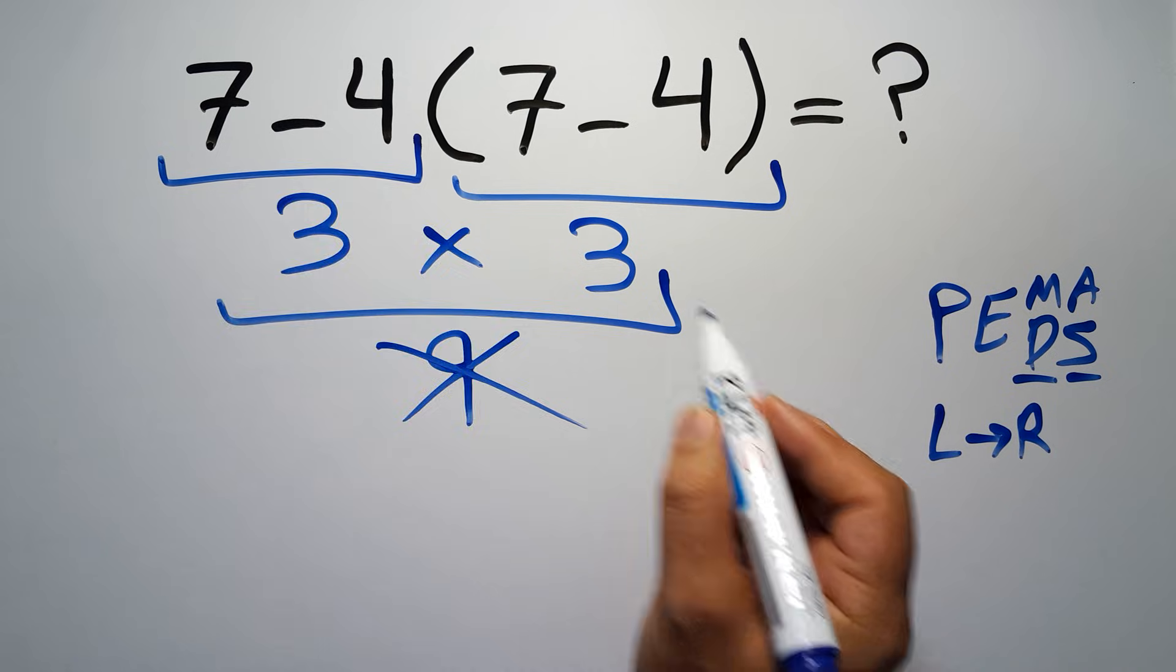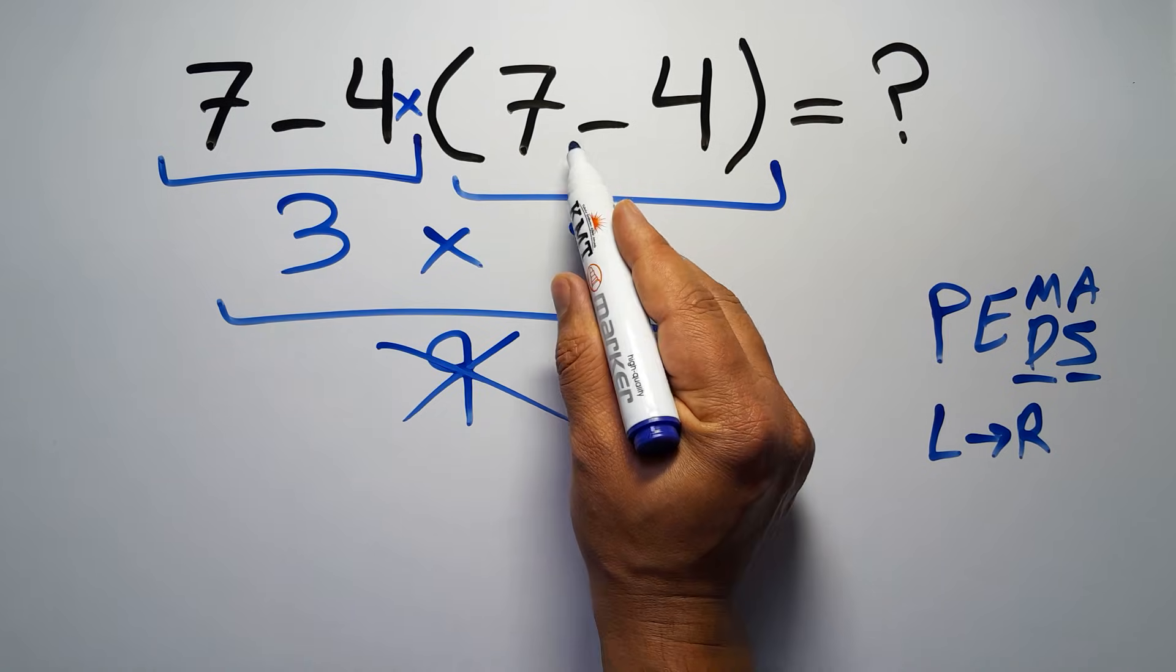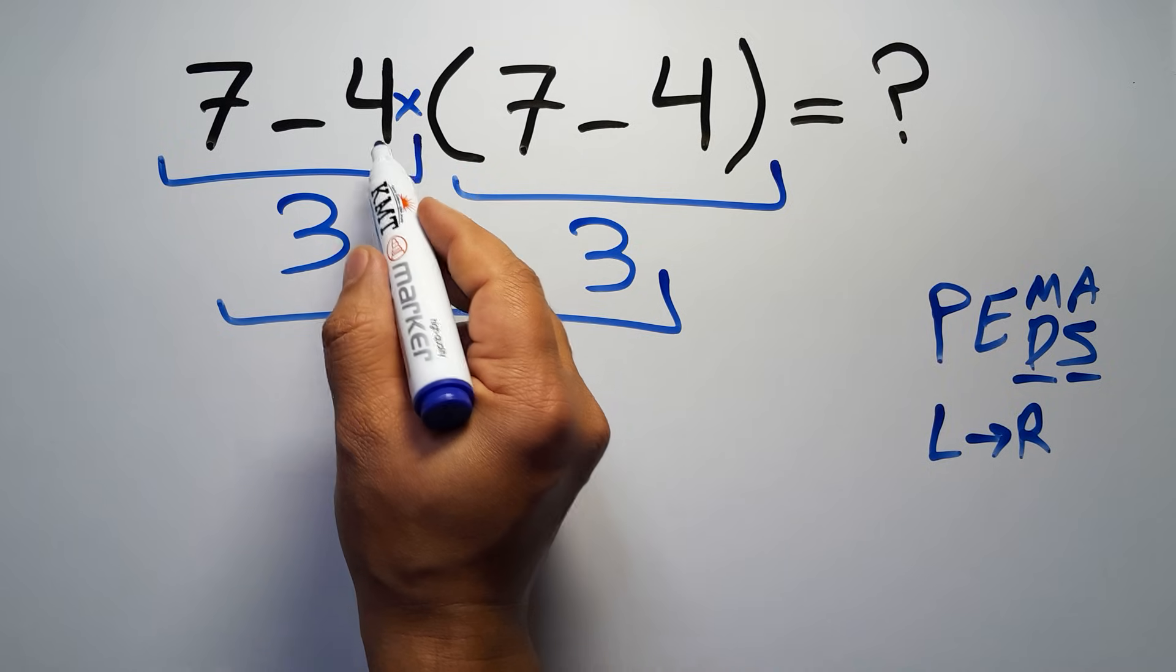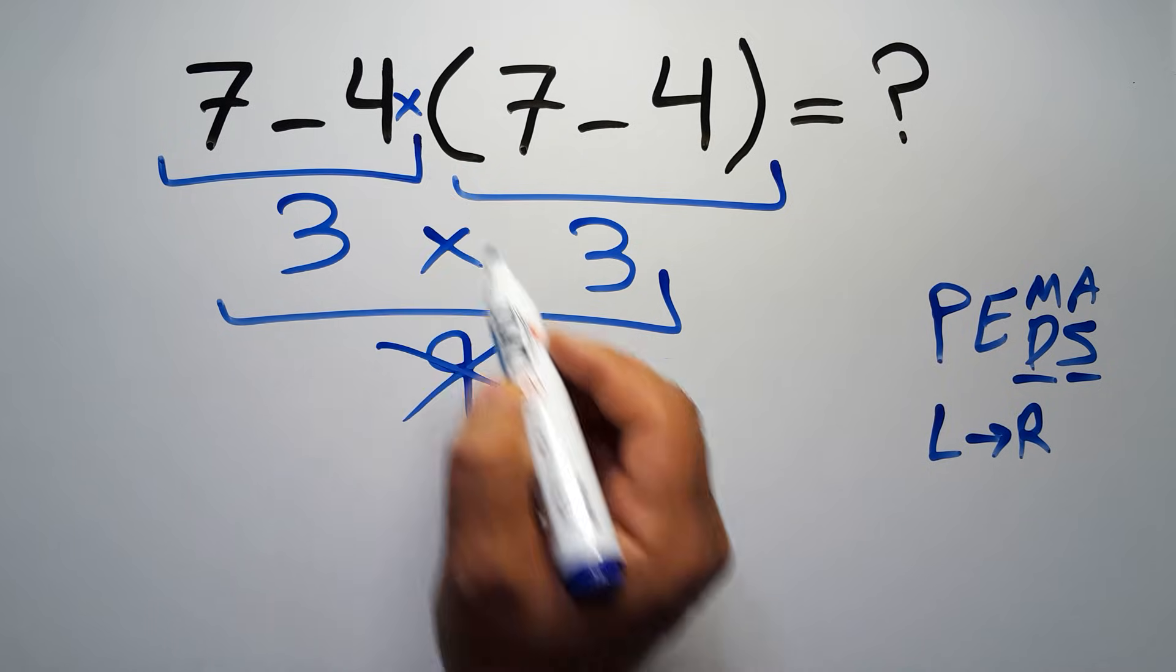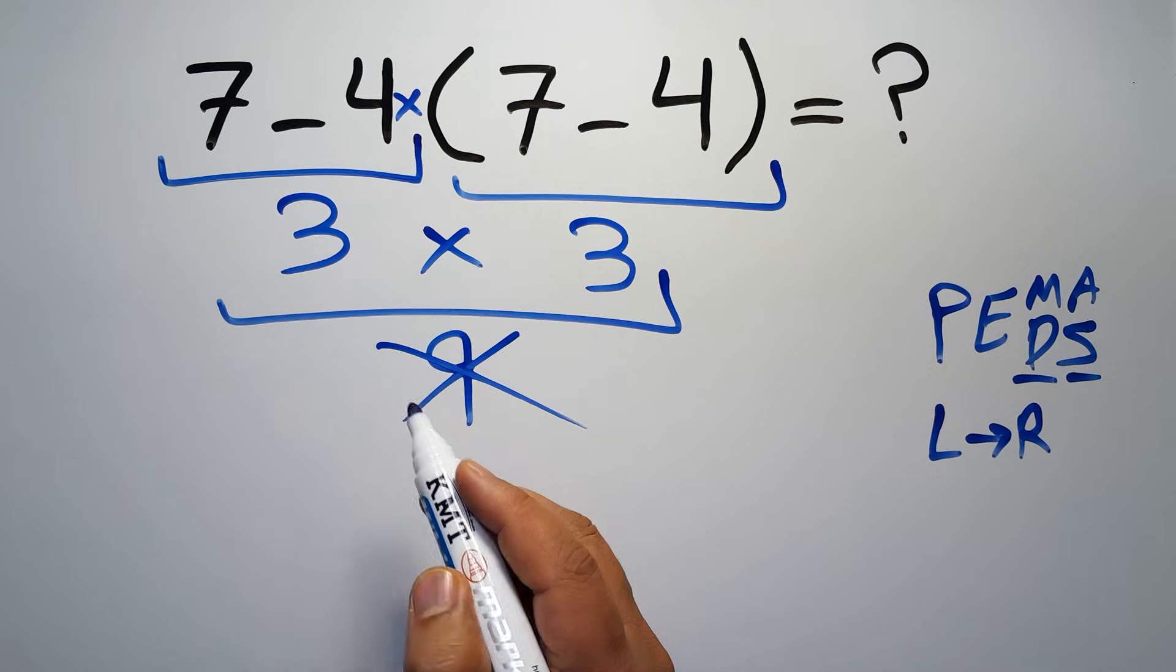In this expression, we have one subtraction, one multiplication, and one parentheses. Inside this parentheses, we have one subtraction. Here we have a multiplication, because in mathematics, when a number is placed next to parentheses, it means multiplication, and we usually don't write the multiplication sign for brevity,